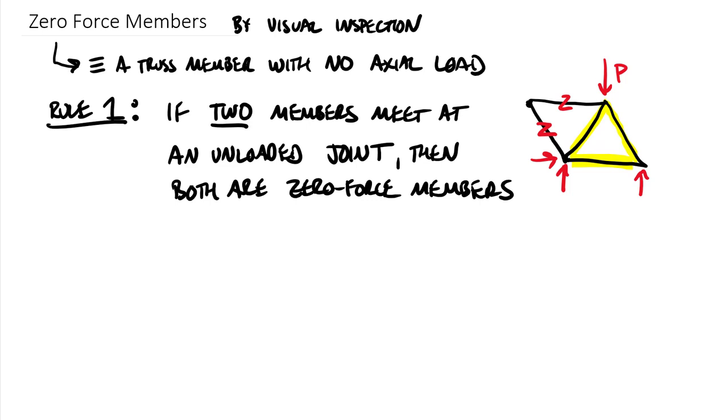So it turns out that both of these members and I have to mark them with Z's are zero force members focusing on this is that joint. Okay two members meeting at an unloaded joint. So that's my unloaded joint there in pink.